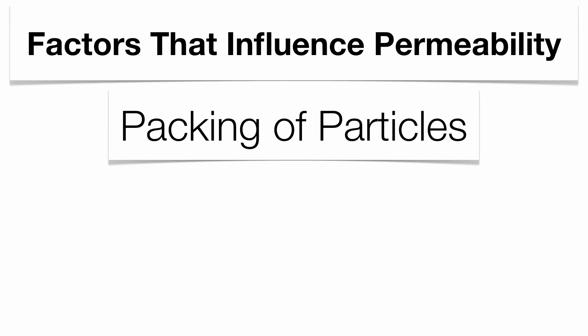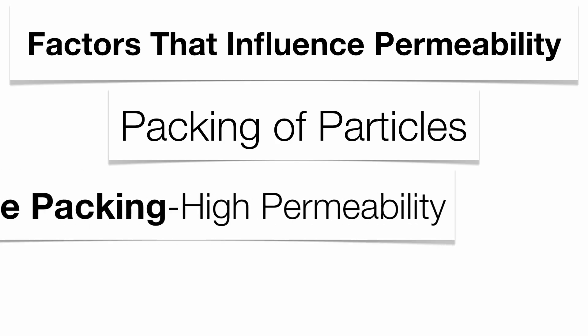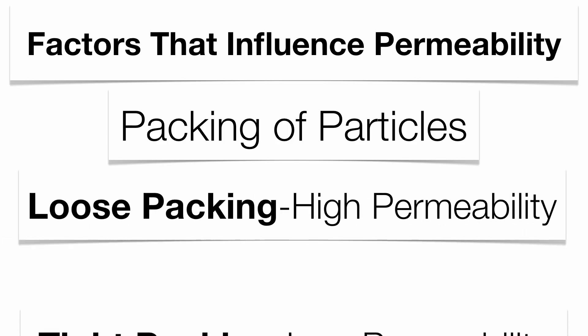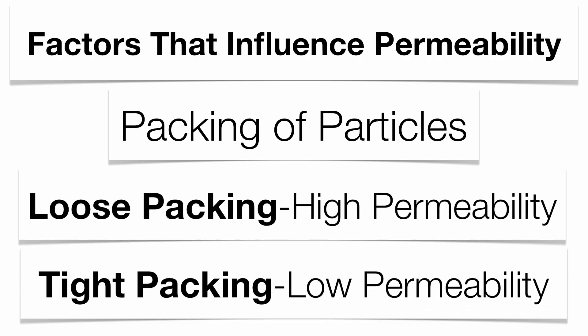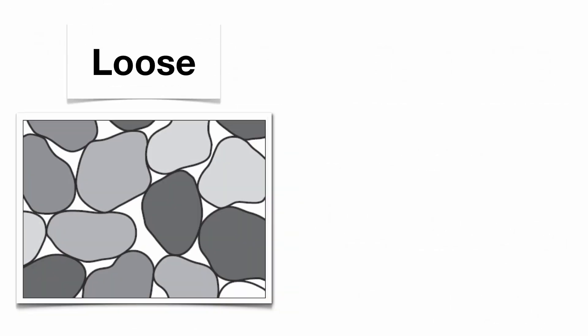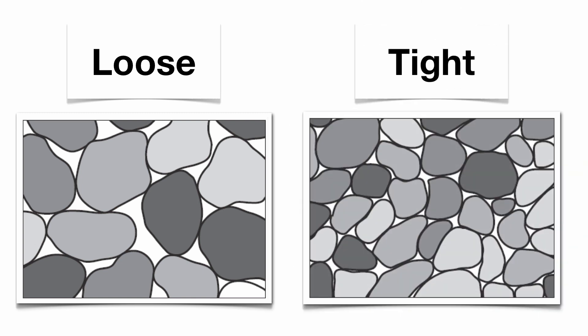The last factor that affects permeability is the packing. Loosely packed gives you a high permeability; tightly packed gives you a low permeability. It's all based upon the spacing in between the fragments — high porosity means high permeability, low porosity means low permeability. It's very important to be able to identify the differences and similarities regarding porosity and permeability.